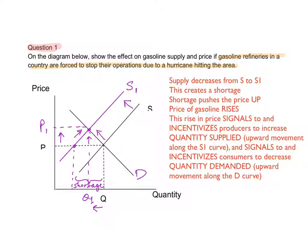This will cause a decrease in supply, so the supply curve will shift to the left — supply will decrease from S to S1. This will create a shortage. As you can see, the shortage is measured by extending the line from the original equilibrium price; the shortage is between those two points, and that's the size of the shortage.